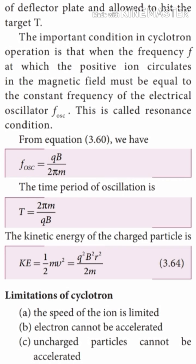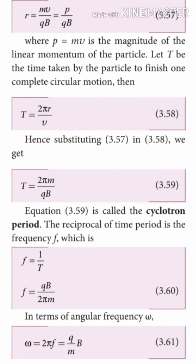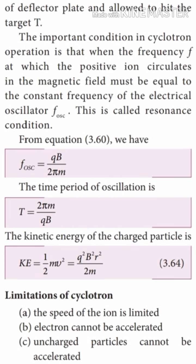The cyclotron period T is given by equation 3.59: T = 2πM divided by Qb. The frequency F = 1/T = Qb divided by 2πM. Here M is the mass of the particle, Q is the charge of the particle, and b is the applied magnetic field. The kinetic energy of the charged particle is K = ½mv².